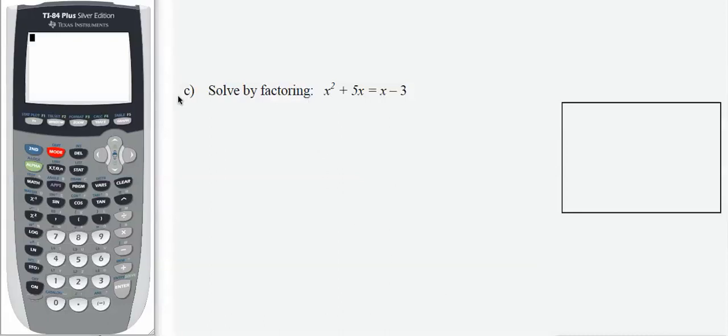Finishing up this problem, I have part C: solve by factoring x squared plus 5x equals x minus 3.